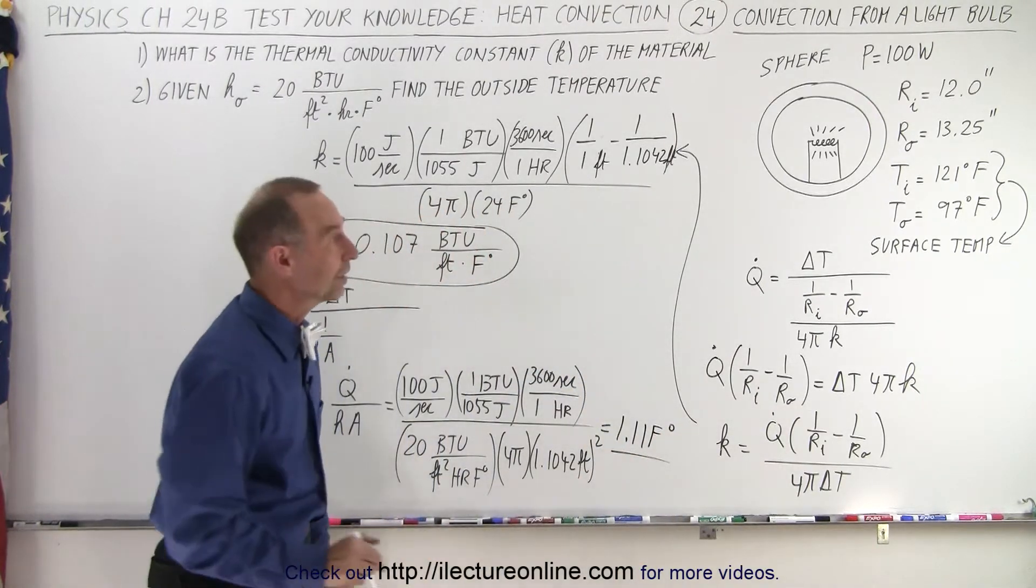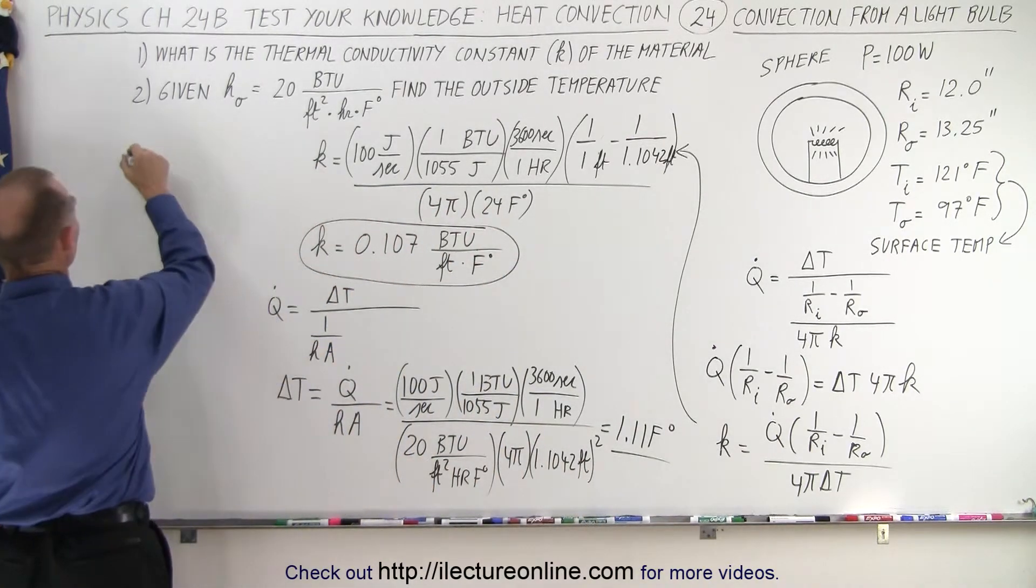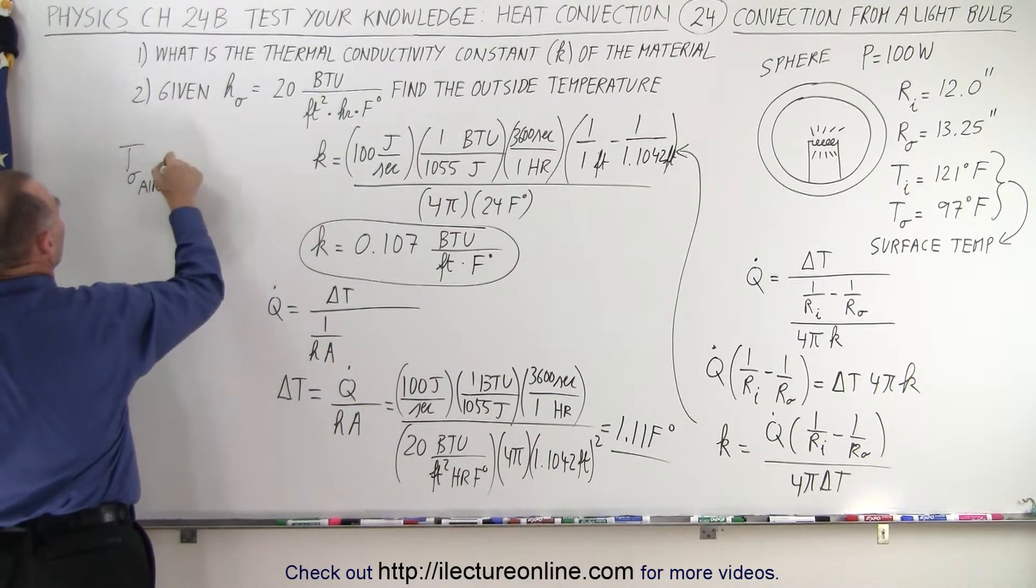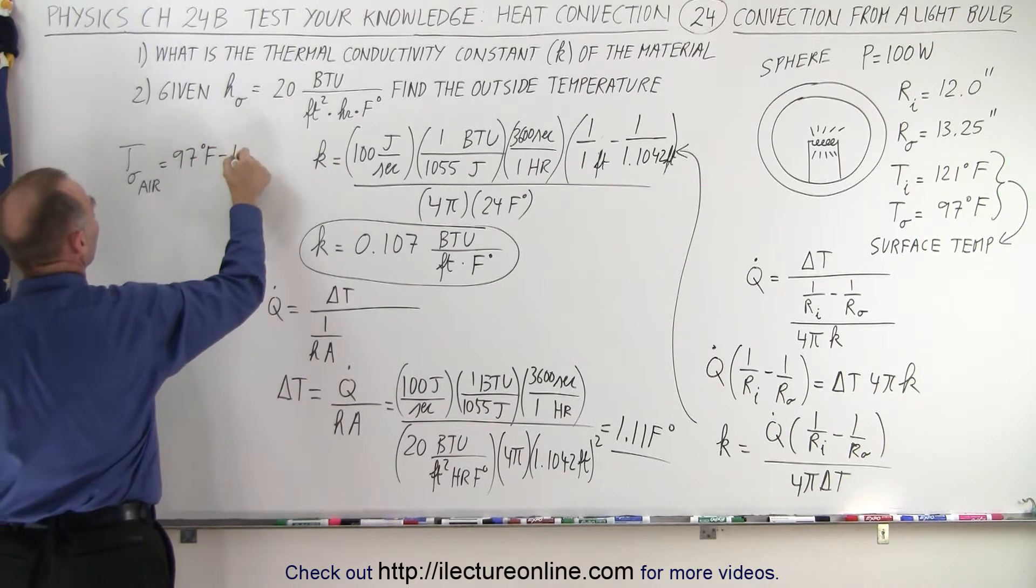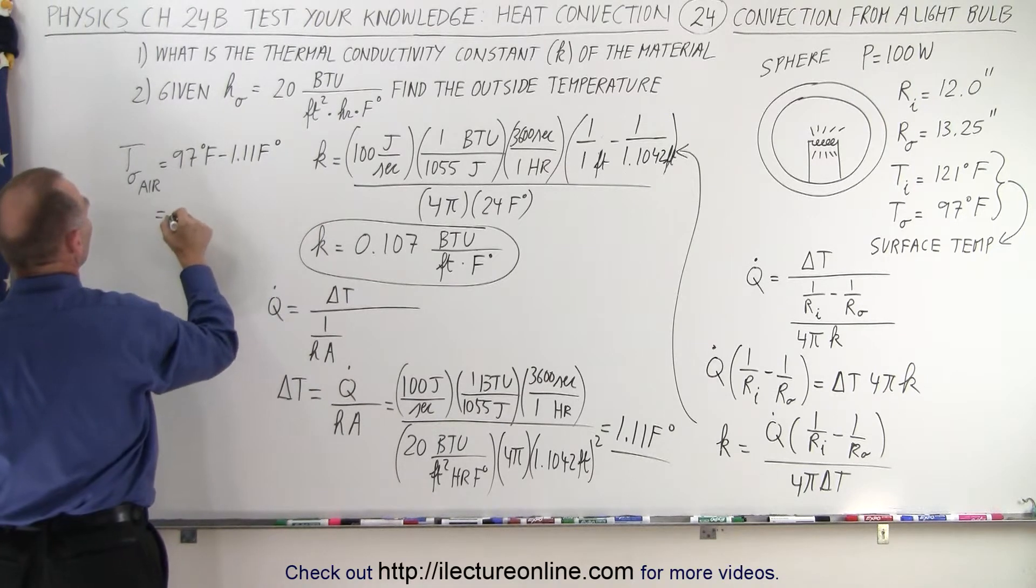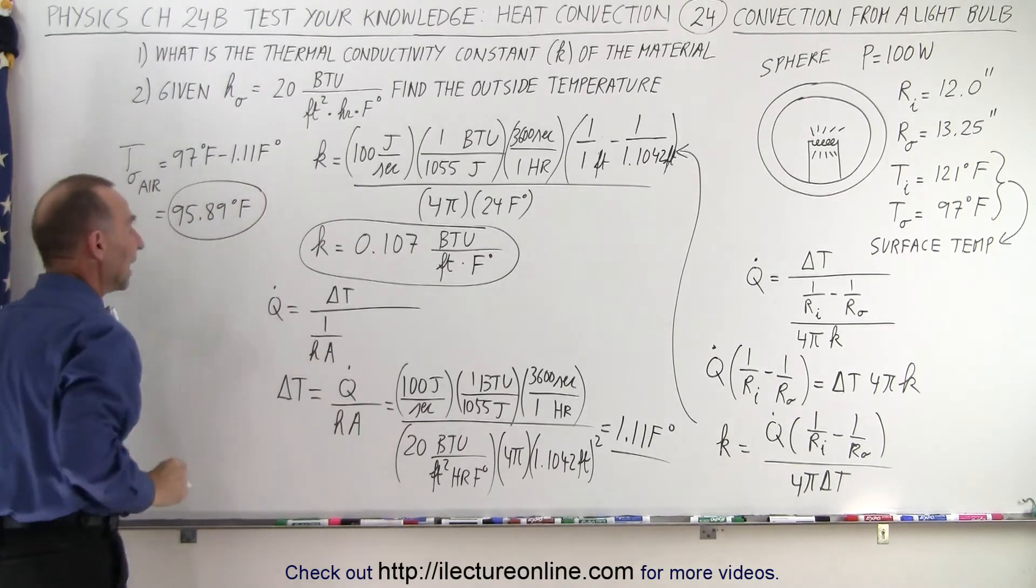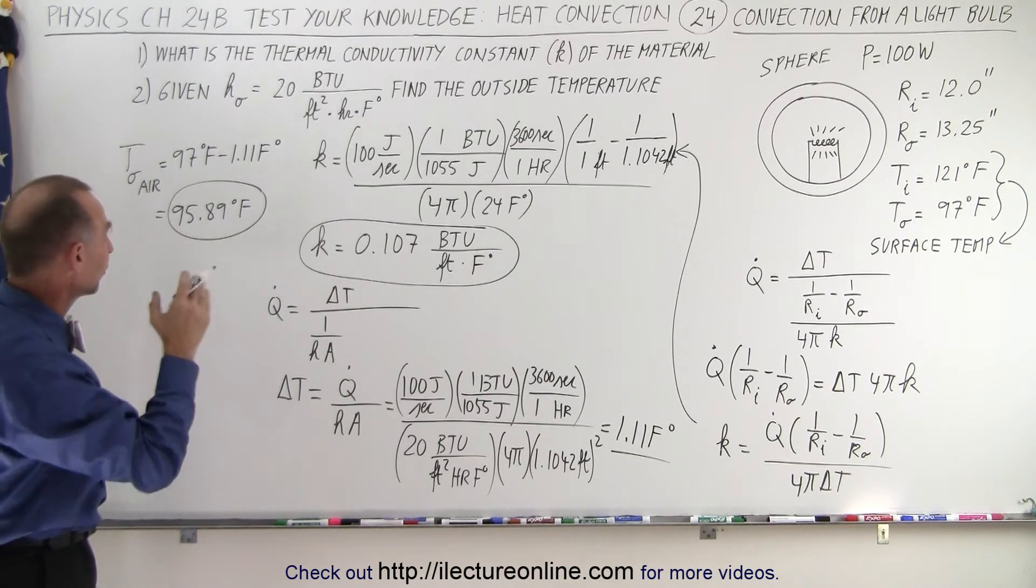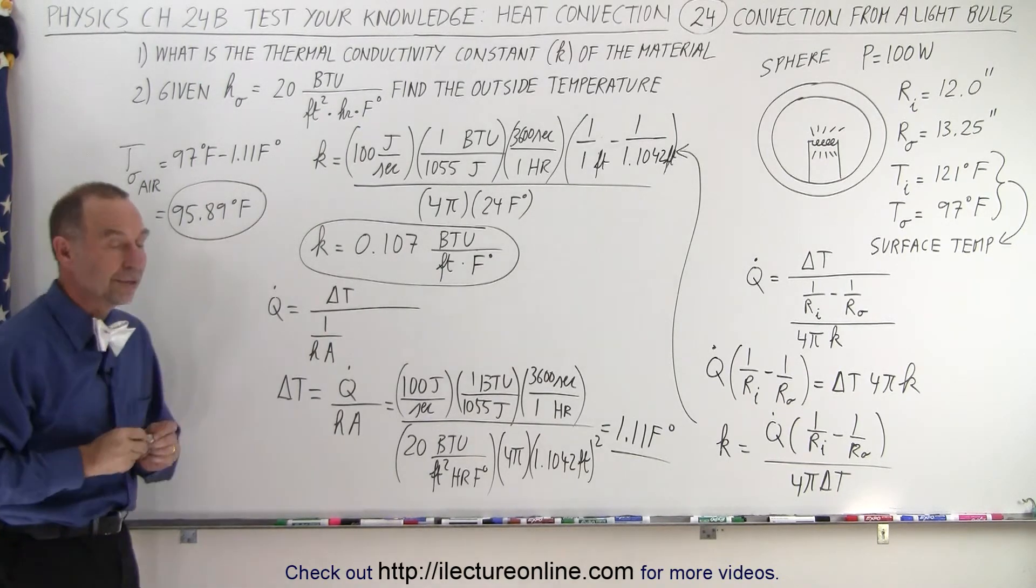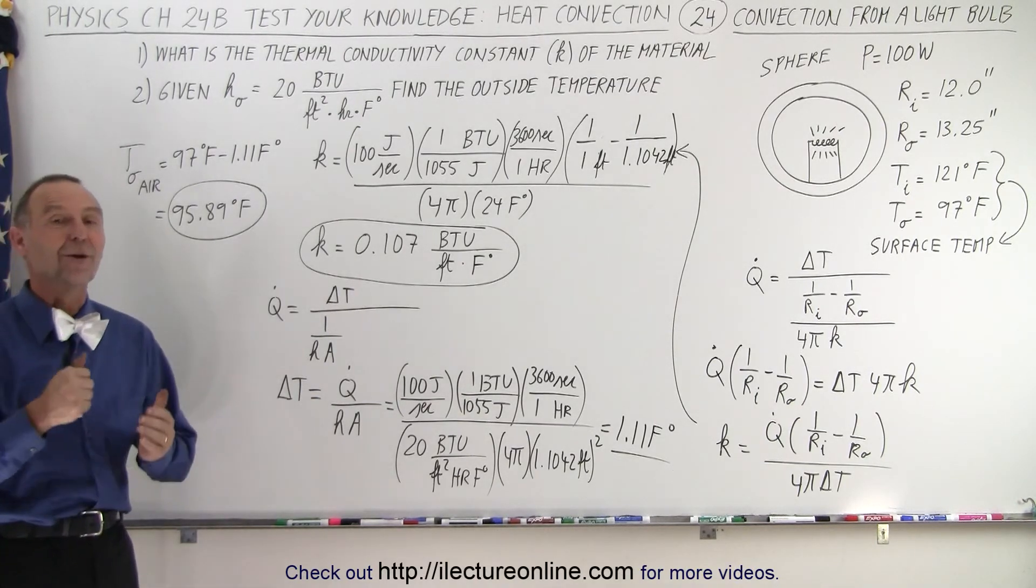Now, notice that the outside temperature of the surface was 97. That means T on the outside for the air is going to be equal to 97 degrees Fahrenheit, minus 1.11 Fahrenheit degrees. So, it will be equal to 95.89 degrees Fahrenheit for the outside air temperature. So, another slightly over 1 Fahrenheit degree drop from the outside surface to the air. And, of course, that's non-forced or ambient air convection. And that is how it's done.